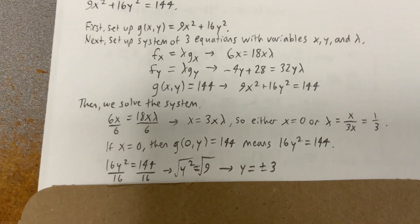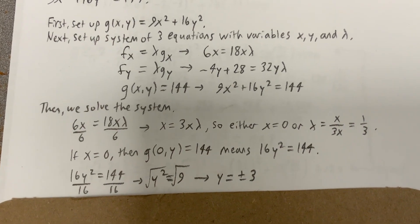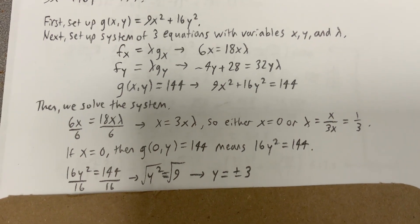So in the first case, if x is equal to 0, then g(0,y) = 144, and we can see through the algebra there that y is going to be plus or minus 3.